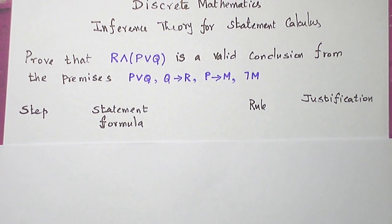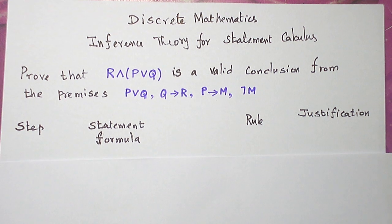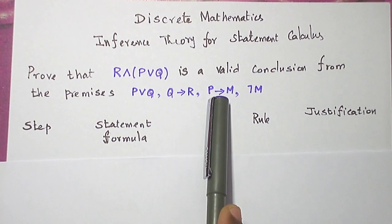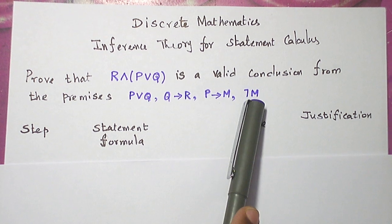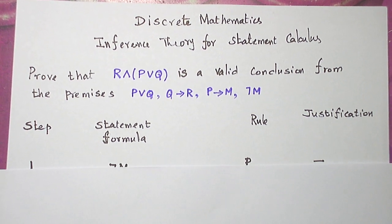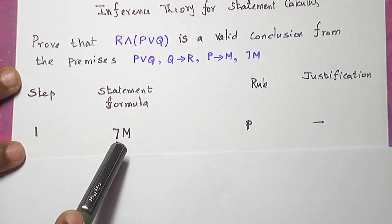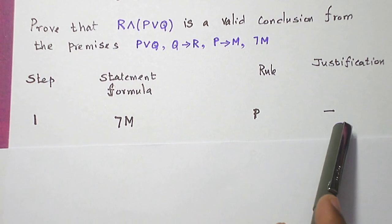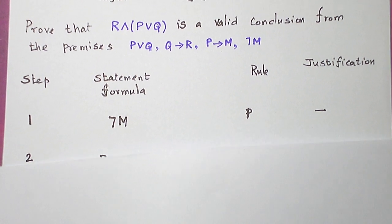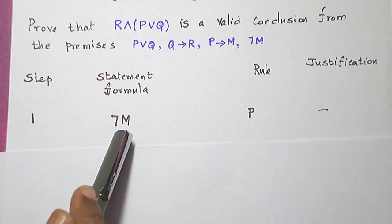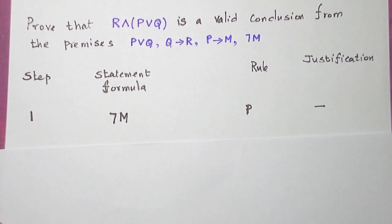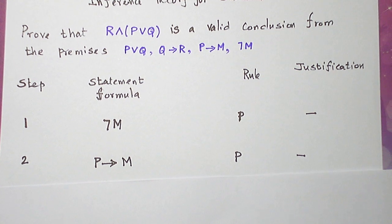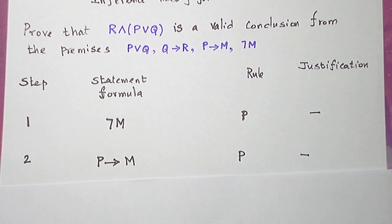I always told you to start with the simplest premise that has no connective at all. The last premise, negation M, is the simplest — it has only a negation connective. So I start the proof with negation M, introduced using rule P, which needs no justification. Next, I introduce P conditional M, a premise that also involves M, using rule P with no justification required.